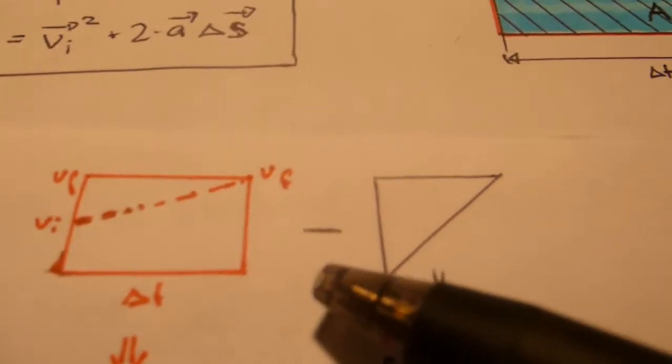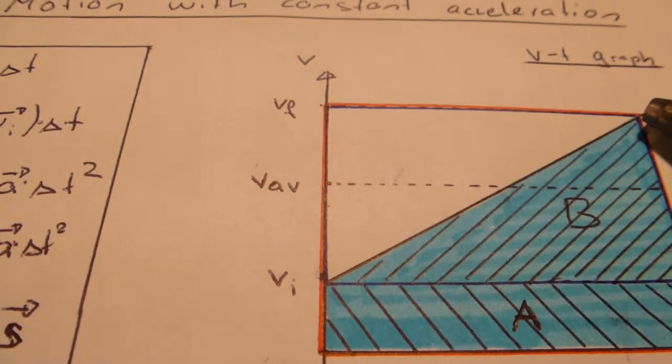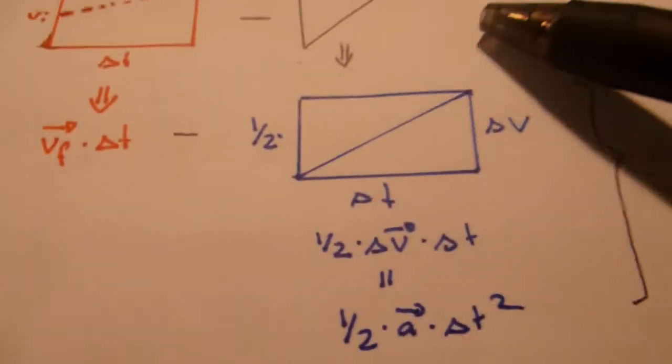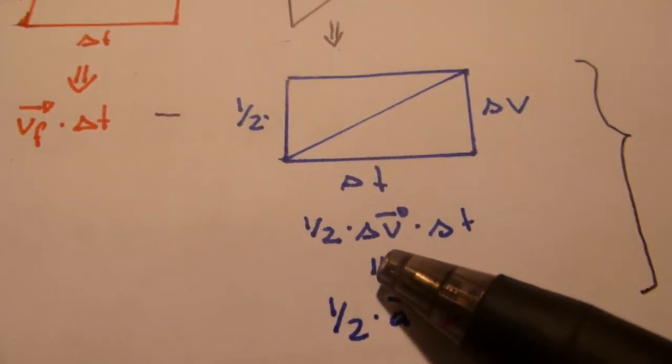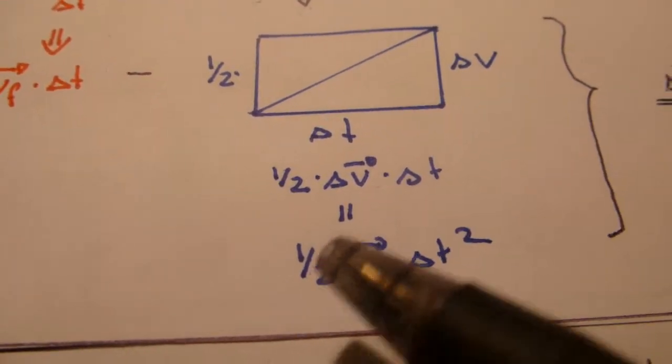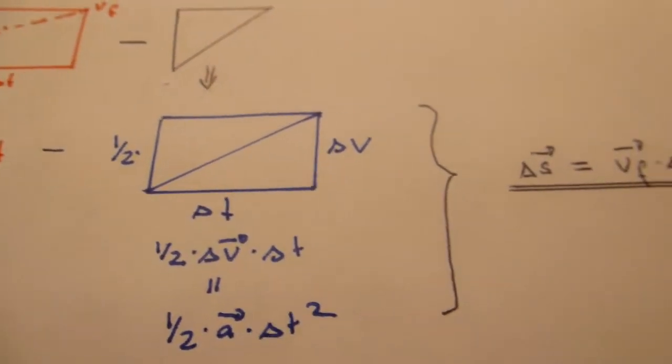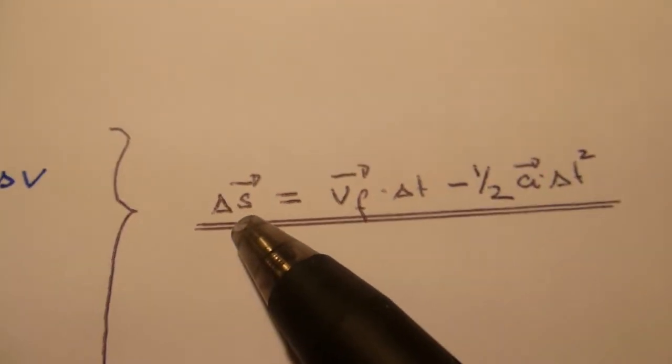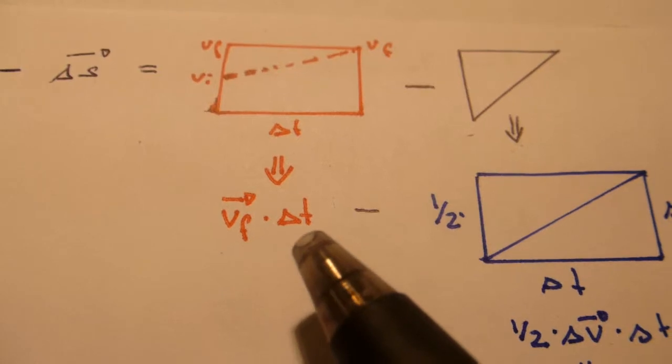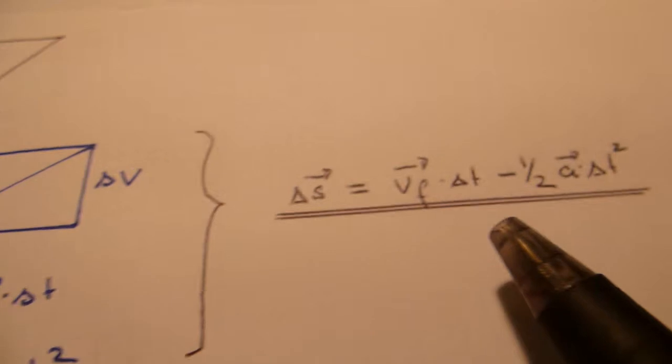So V final times delta T and then we subtract the white triangle here, which is exactly the same area as the blue triangle, namely one half times change in velocity times delta T, which is what we already calculated, one half A delta T squared. Therefore we get delta S is the big red square, V final times delta T minus one half A delta T squared.